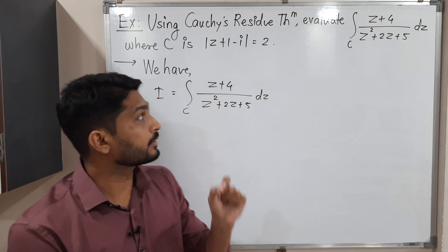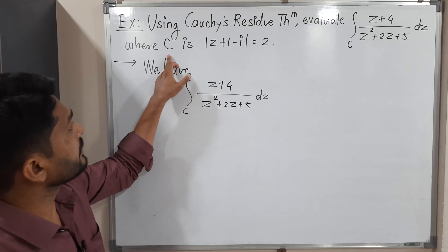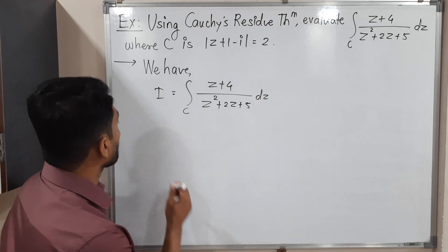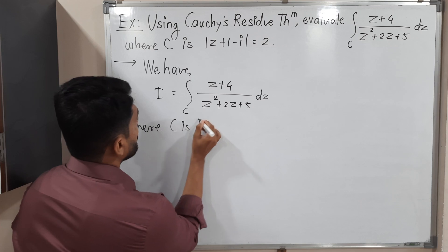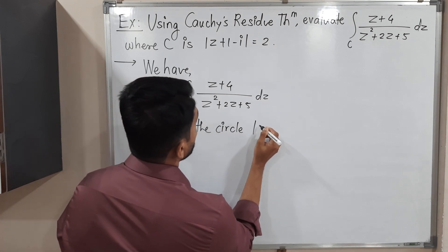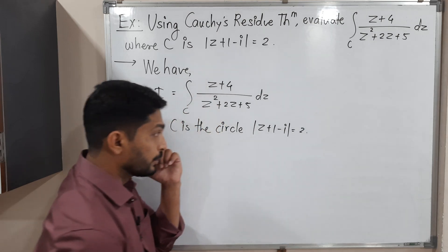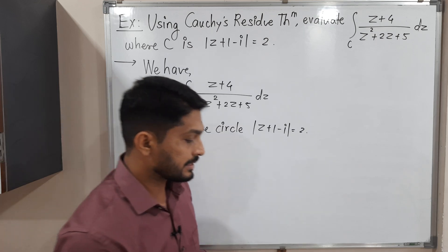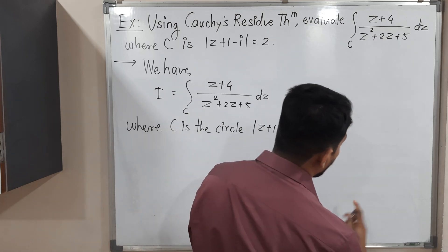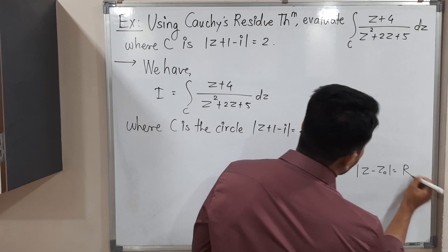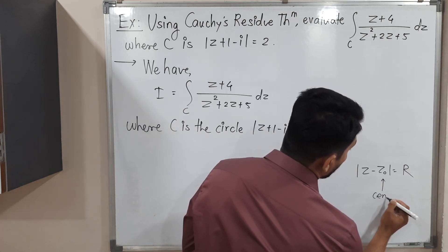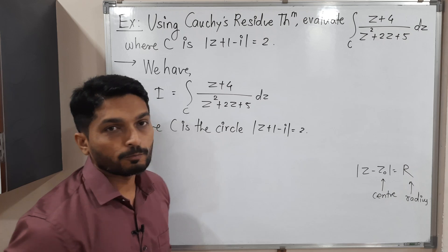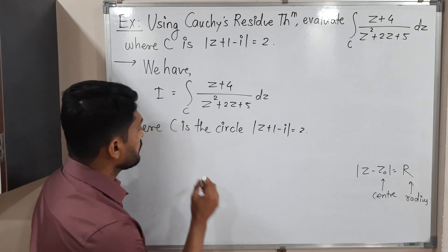The second important thing is the contour C. We should consider that contour and draw it first. The given contour C is a circle whose equation is |z + 1 − i| = 2. We have to draw this circle, and for that we need the center and radius. We will compare the given equation with the standard equation |z − z₀| = R, where z₀ is the center and R is the radius.